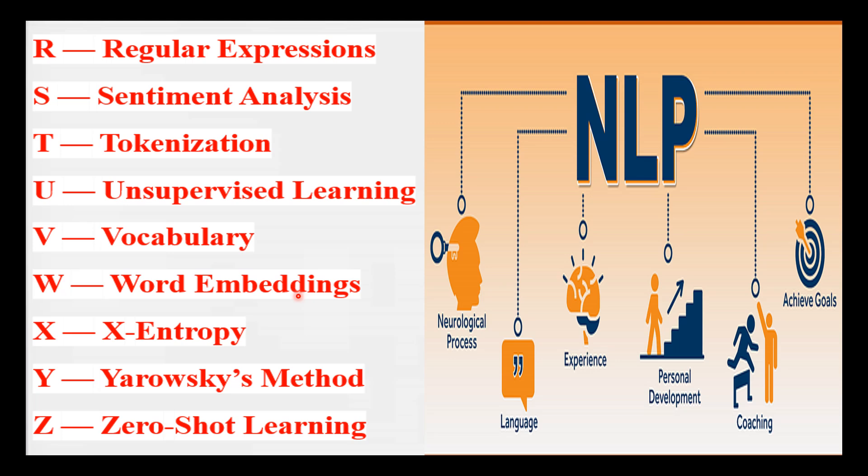Y is for the Yarowsky method — a technique for unsupervised word sense disambiguation that uses the distributional similarity of words in context to infer the sense of a word. For example, disambiguating the meaning of 'bank' by analyzing its usage in a sentence.